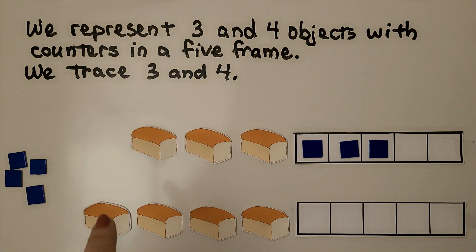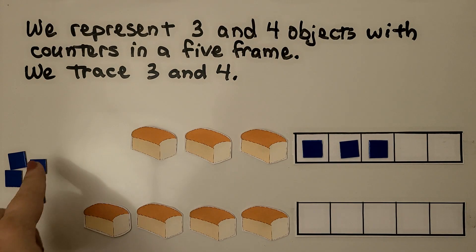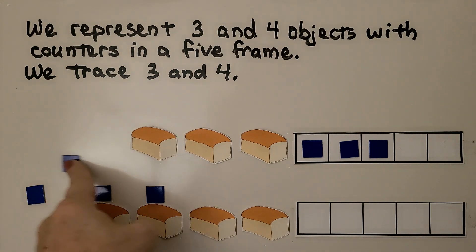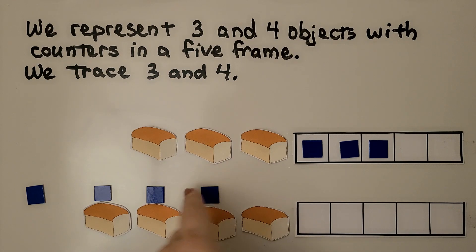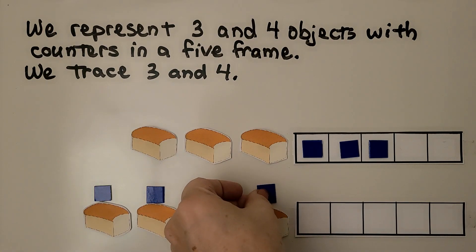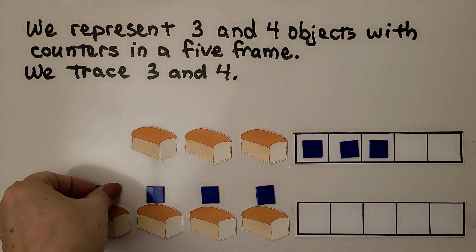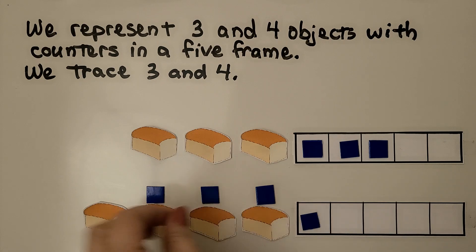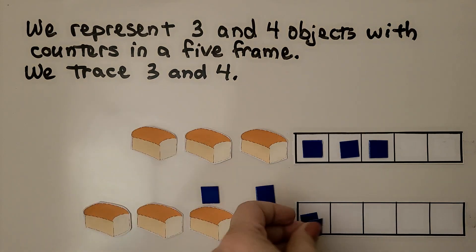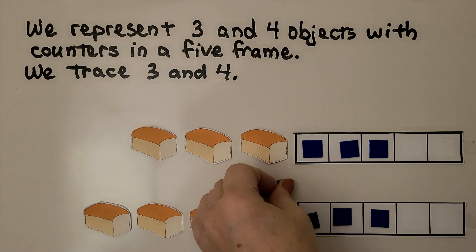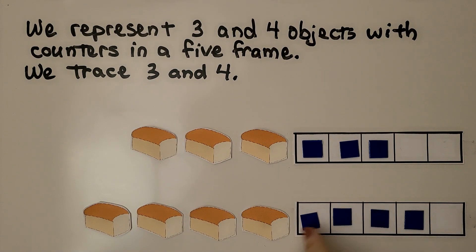Here we have 1, 2, 3, 4 loaves of bread. We can put a counter for each loaf of bread. We have 1 counter for each loaf of bread. We can put them in the 5-frame: 1, 2, 3, 4.